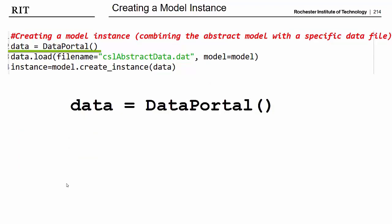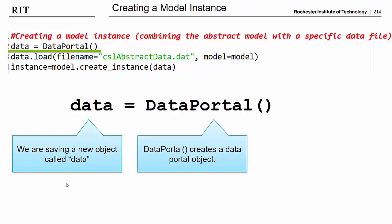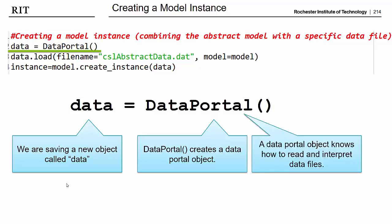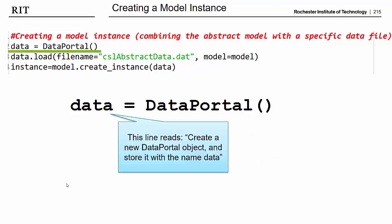So the first step in creating a model instance is the line that reads data equals DataPortal. The data part of this line is basically saying, hey, create a new object and call it data. And what data is going to be is a data portal object. A data portal object basically knows how to handle data files. It knows how to read them in, how to load them, how to store the information. So basically, a translation of this first line might be, create a new data portal object and store it with the name data.